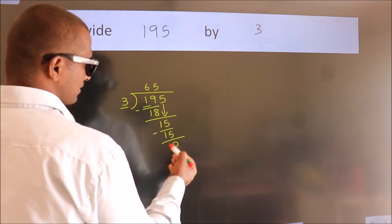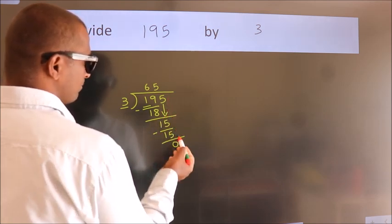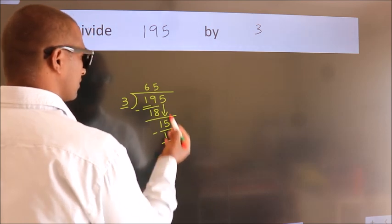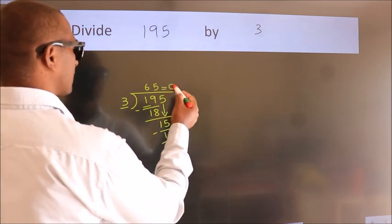After this, no more numbers to bring it down. And we got remainder 0. So this is our quotient.